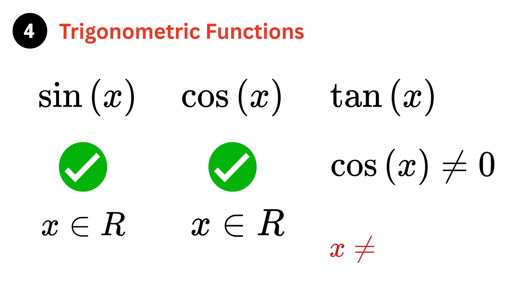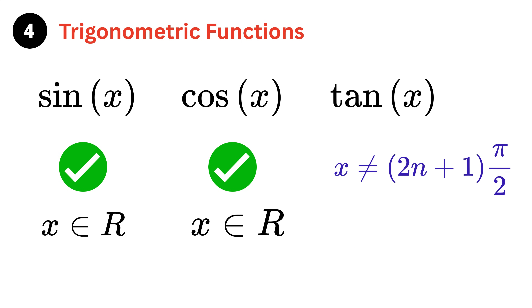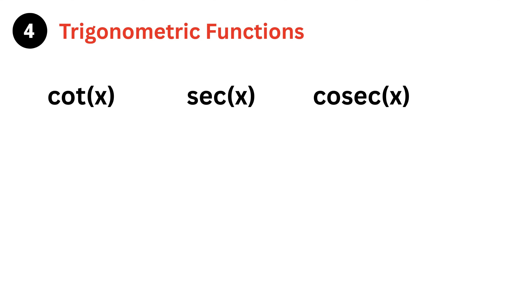Cosine equals zero at x = π/2 (90 degrees) and x = 3π/2 (270 degrees), and so on — in fact, it happens at every odd multiple of π/2, written as (2n + 1)·π/2. The remaining trig functions — cotangent, secant, and cosecant — are reciprocals of tangent, sine, and cosine respectively, and can be handled accordingly.